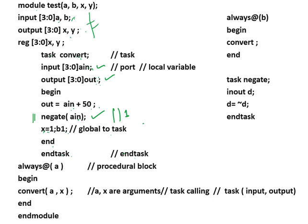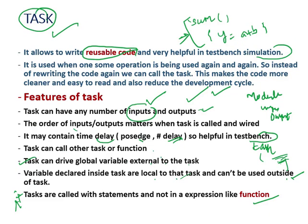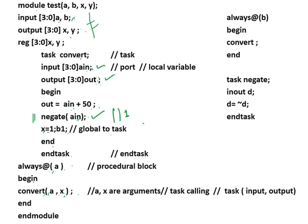Inside a procedural block — always @(a) — we can call a task. Here, 'convert(a, x)' is called with two arguments. Remember that the order of inputs and outputs matters. In the task 'convert', 'a_in' is declared first as input and 'out' is declared second as output.